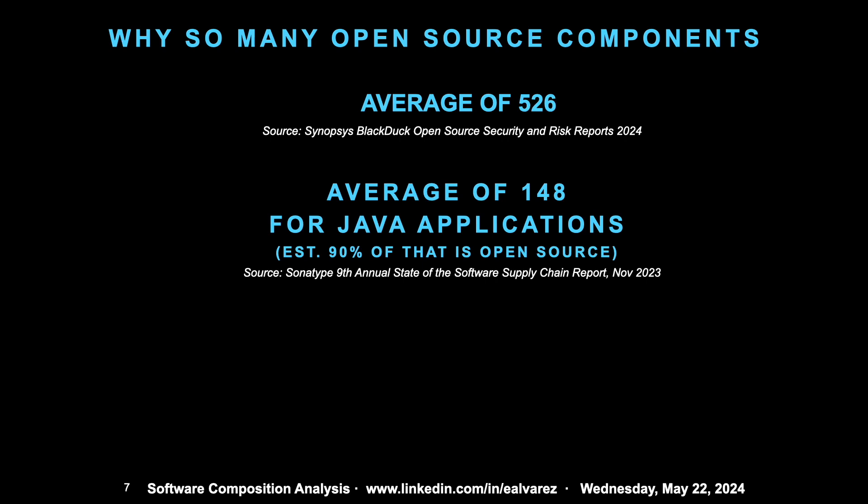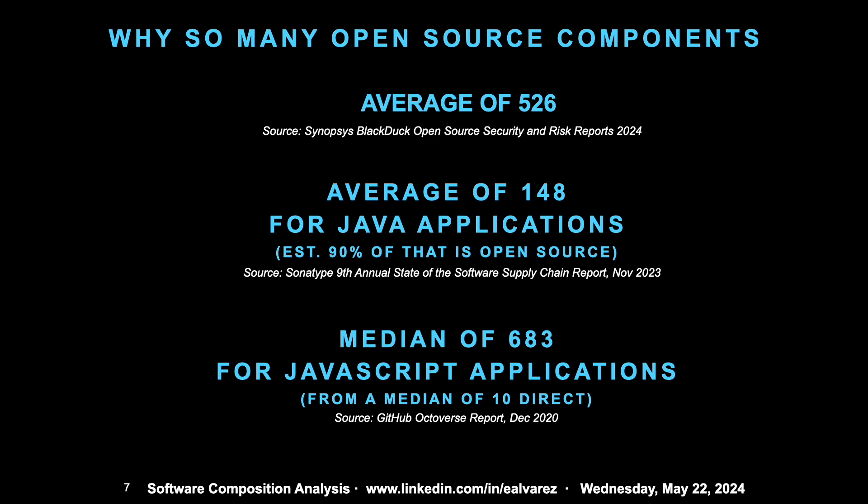The Sonatype report says that Java applications have an average of 148 dependencies. But it's not even really 148 because that's a total number of dependencies — the estimation is 90% of that is open source, so it's really about 130 something versus 526. What's happening is there's an elephant in the room, and it's called JavaScript. The majority of code written in the last few years is coming from JavaScript. We have yet another data source from the GitHub Octoverse Report, from 2020, showing a median of 683 dependencies coming from a median of 10 direct dependencies.